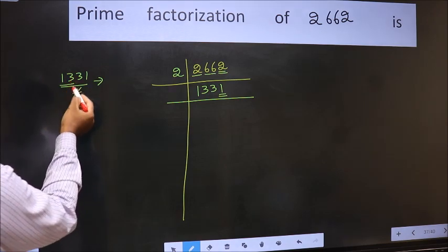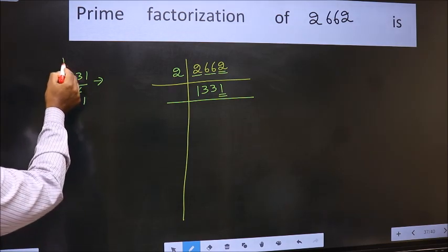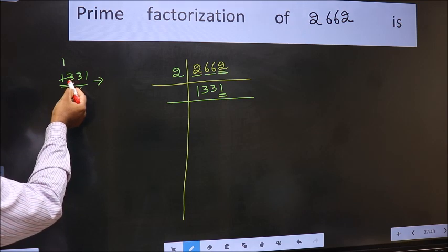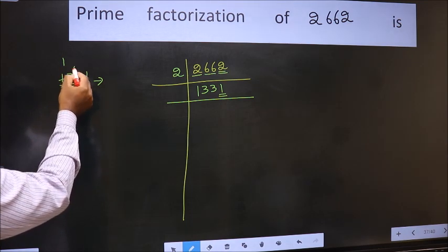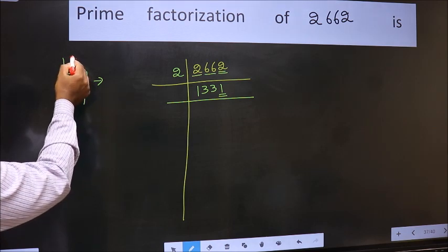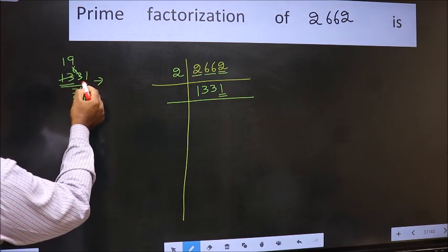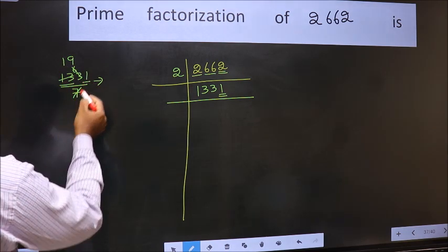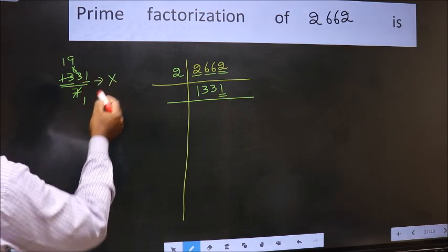Our number close to 13 in 7 table is 7, 1, 7. 13 minus 7, 6, 6 carried forward 63. When do we get 63 in 7 table? 7, 9, 63. We don't get 1 in 7 table. So, this is not divisible by 7.